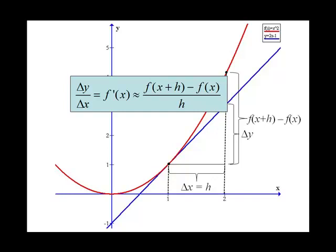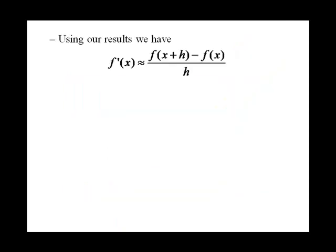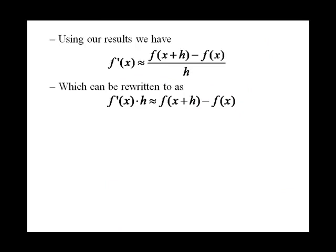We're going to take a further look at that result. We can rewrite the difference quotient to be f prime of x times h equal to f of x plus h minus f of x. Now, f prime of x times h is our derivative times our change in input, and f of x plus h minus f of x is our change in output.